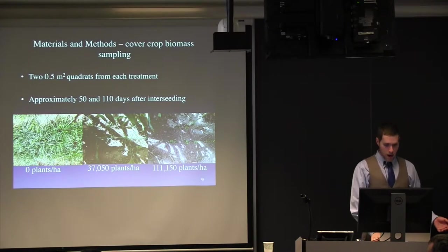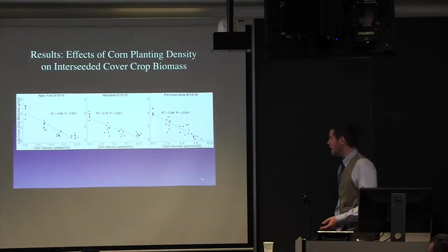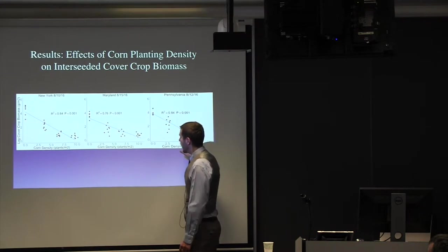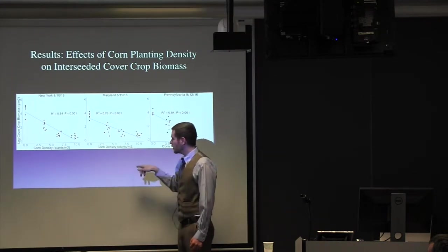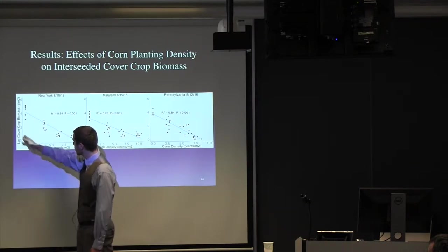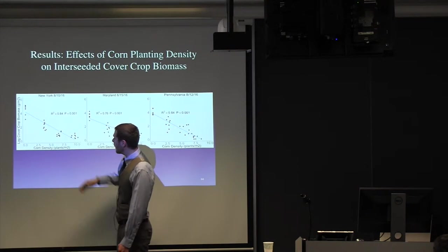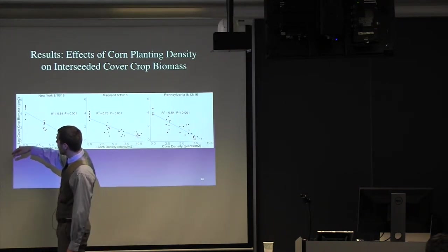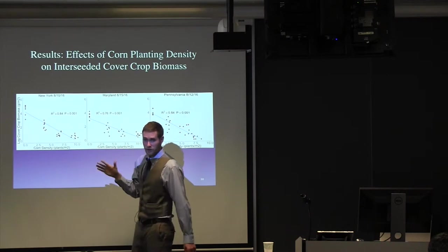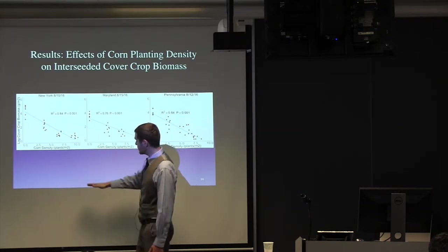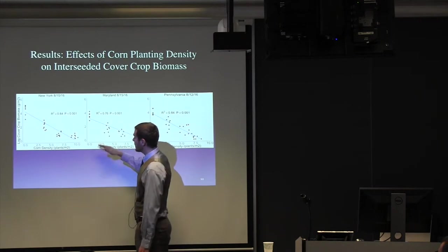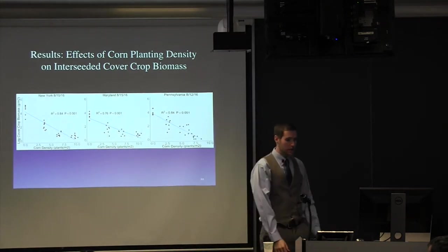So, let's look at some results. Here we have all three of the sites. So, New York, Maryland, Pennsylvania, corn planting density. And this is expressed in plants per meter squared, not in plants per hectare. And you can just think about this as no corn, low, medium, and high. And then the log of the cover crop biomass, grams per meter squared. So, this is in that first sampling date, 50 days after we interseeded. And we see this really nice relationship where, as you increase the corn density, the biomass of cover crop decreases. So, it's significant in all three sites, very exciting.